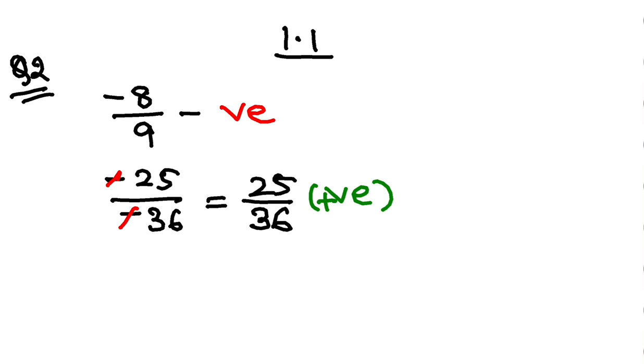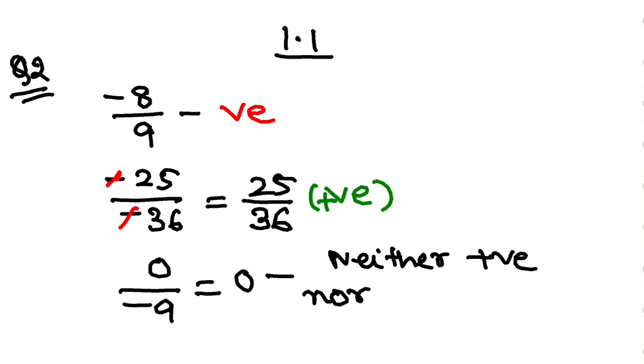Now let us discuss the important one: 0 by minus 9. Although this looks like negative, this is not, because 0 by any number is 0, and this 0 is neither positive nor negative.